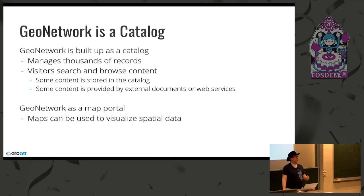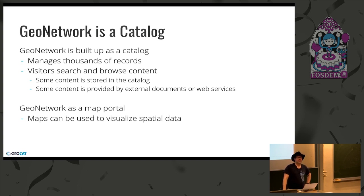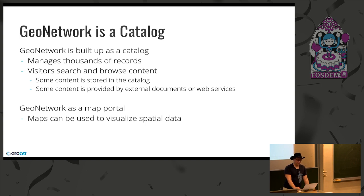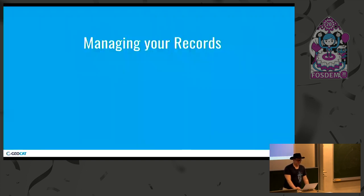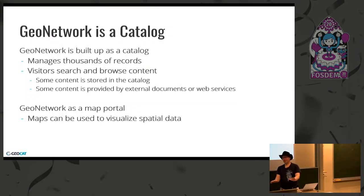So out of the box for visitors, GeoNetwork is providing a really nice professional catalog. People use it to manage hundreds of thousands of records, and visitors search and browse for content. Some of the content is stored directly in the catalog — images, PDF reports, and so on — and some of it is cataloging external web services or external data sets. GeoNetwork can also just be used as a map portal to actually visualize the content. Any questions about this core capability?